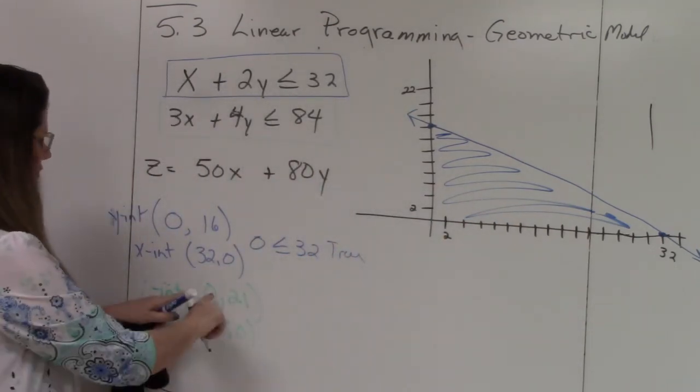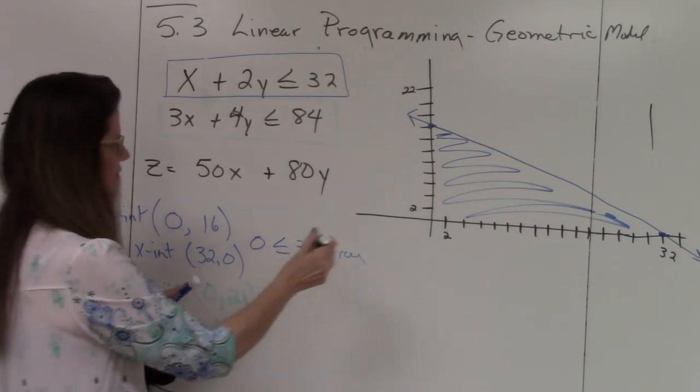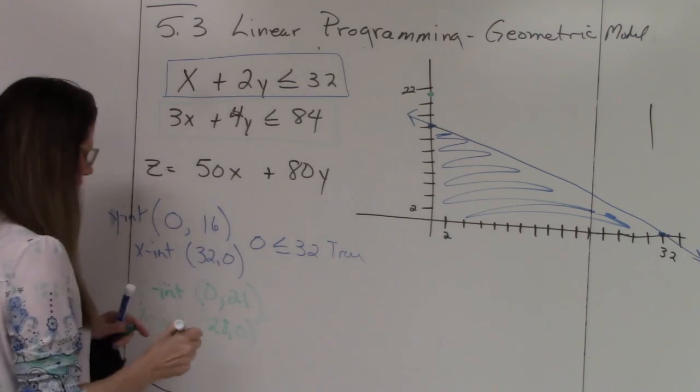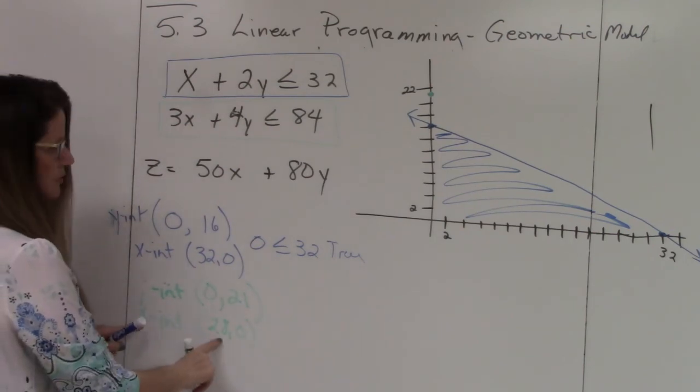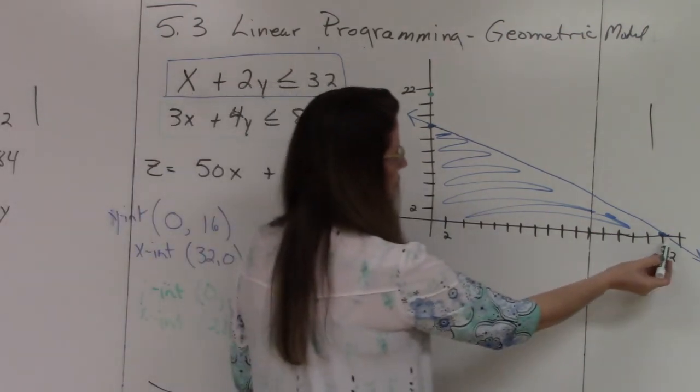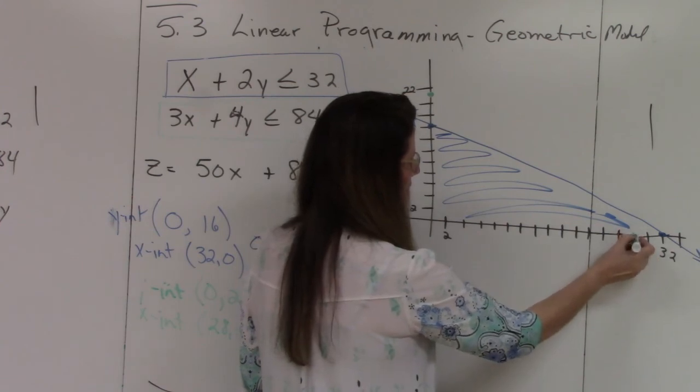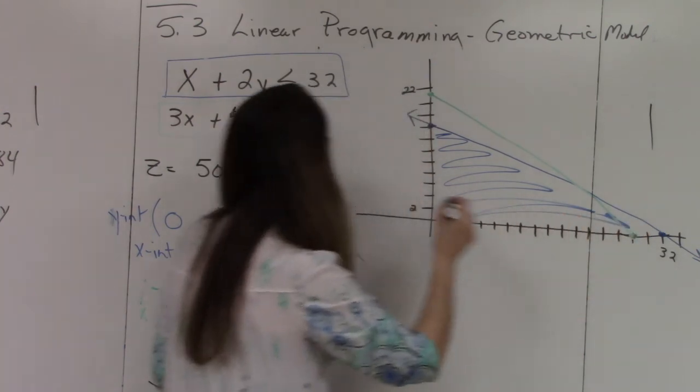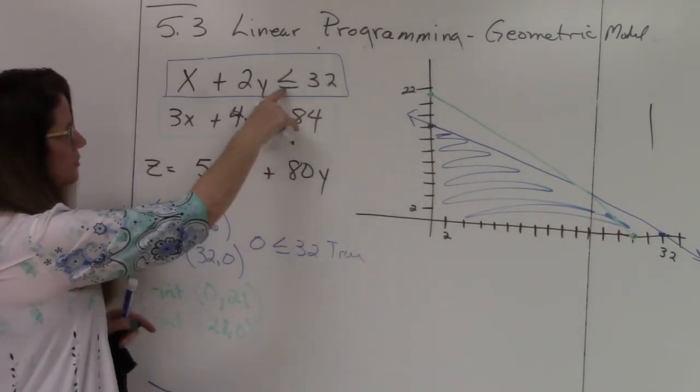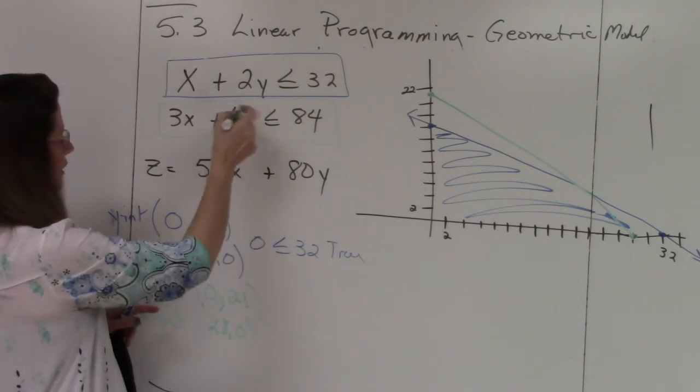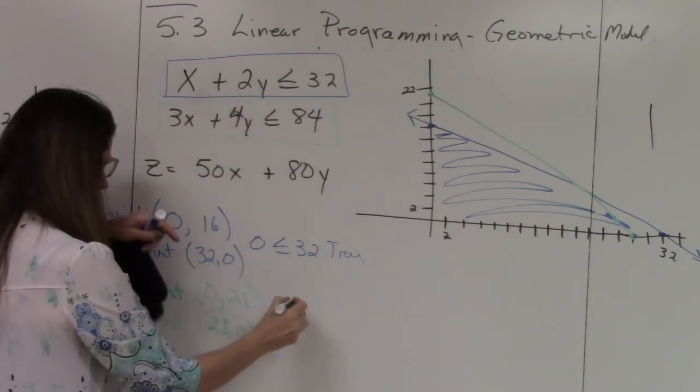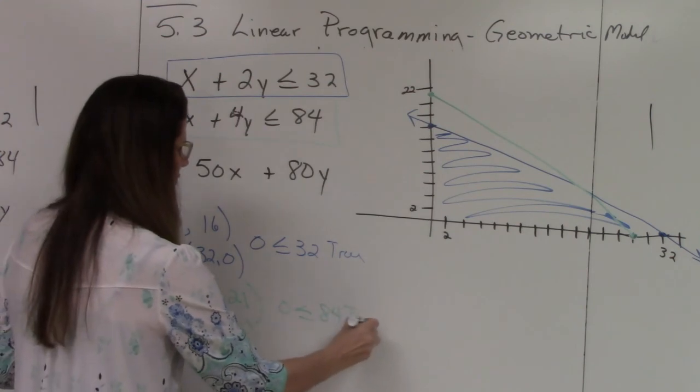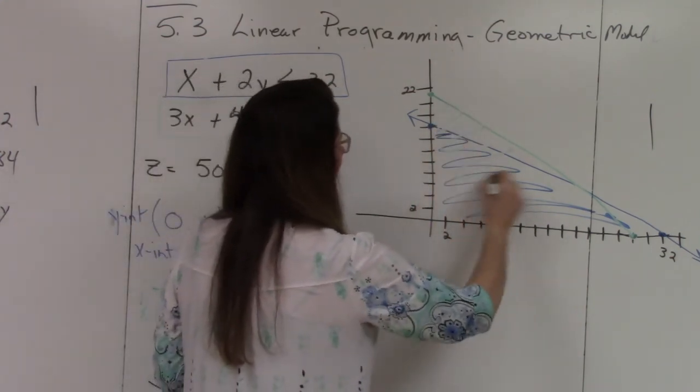And now I'm going to do the green. So green, the Y-intercept is 0, 21. So 21 is here, right in between. And then my X-intercept is 28, 0. So here's 32, 30, 28 is here. So I'm going to make my line. It's a solid line because I have less than and equal to on both of them. Now I'm going to do my test point. So 0 is less than or equal to 84. This is also true. So I'm going to shade down here.